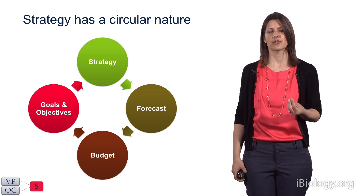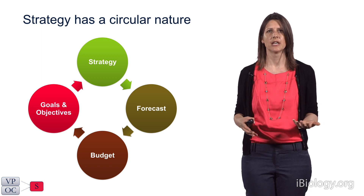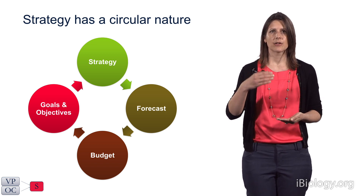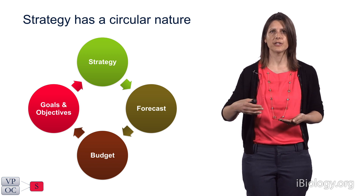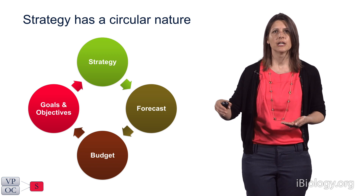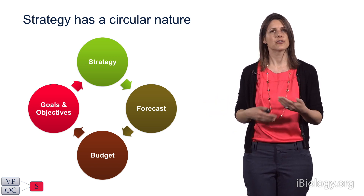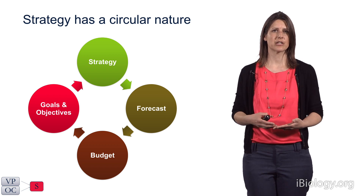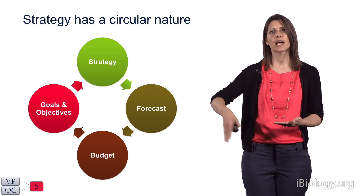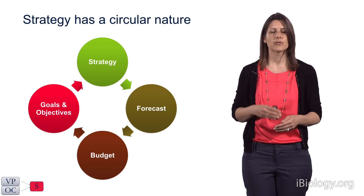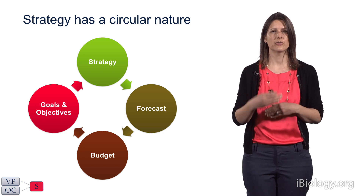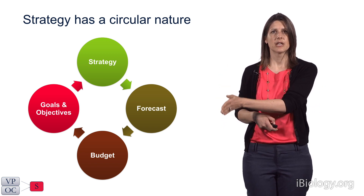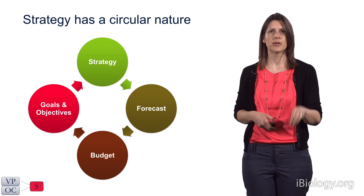Strategy has a circular nature — it is never static. In large organizations, this is often an annual strategic planning process. A focus on strategy in the first quarter leads to forecasting and portfolio planning, then budget decisions around Q3, and in Q4, a focus on goals and objectives for everyone in the organization. You see this continue year over year — an annual focus at the beginning of the year on long-term strategy, leading to that short-term series of goals and objectives.